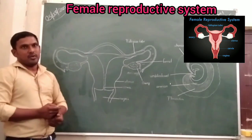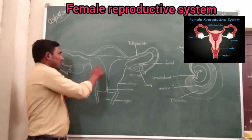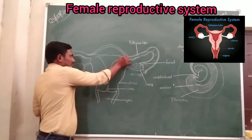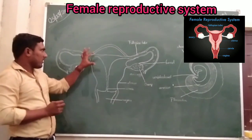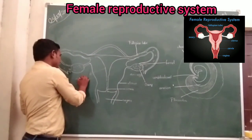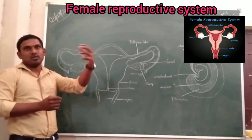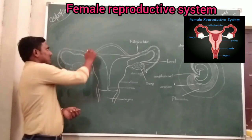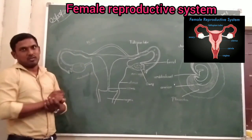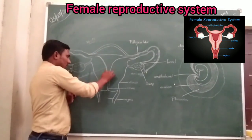Next, let us discuss the uterus. The uterus is a pear-shaped bottle structure. It contains one layer called the endometrium. When girls reach adolescence — around 13 years of age — their body matures. When maturation happens, the walls of the uterus begin to break down.